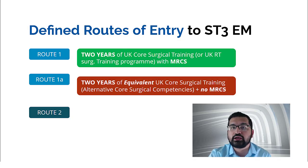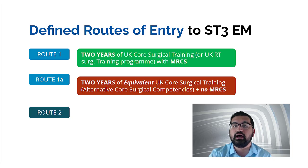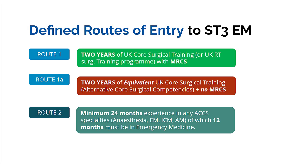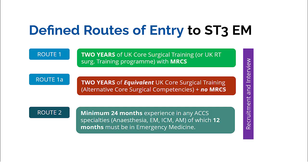Route one also covers those with equivalent UK core surgical competencies: if you can get alternative core surgical competencies signed off, even without MRCS, you'll be eligible to apply for DRE-EM at ST3. Route two is if you have a minimum of 24 months' experience in any of the ACCS specialties — anesthesia, emergency medicine, intensive care medicine, or acute medicine — of which 12 months must be in emergency medicine. This route is particularly important for many international medical graduates. If you have completed any of this, you can go through the recruitment interview and join ST3-EM directly without going through the ACCS-EM pathway.